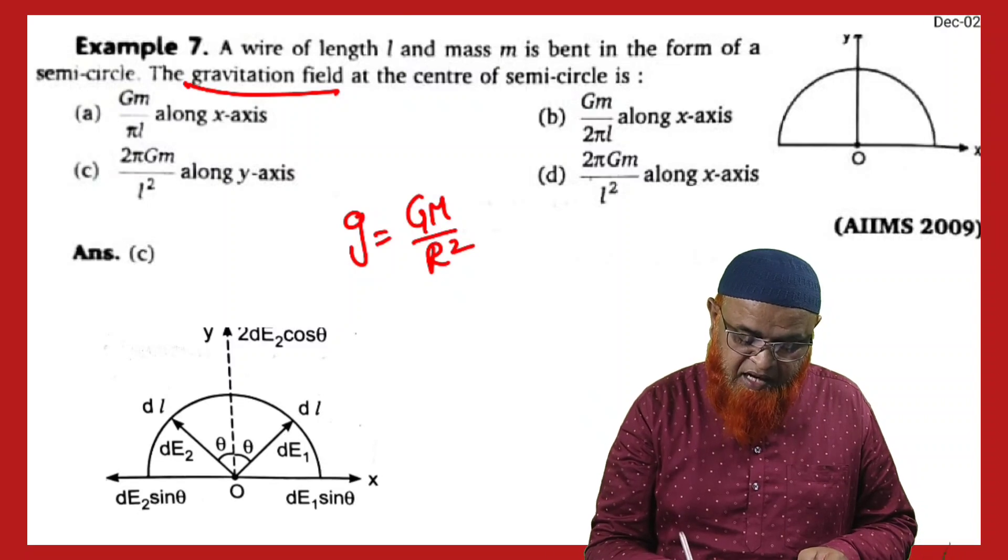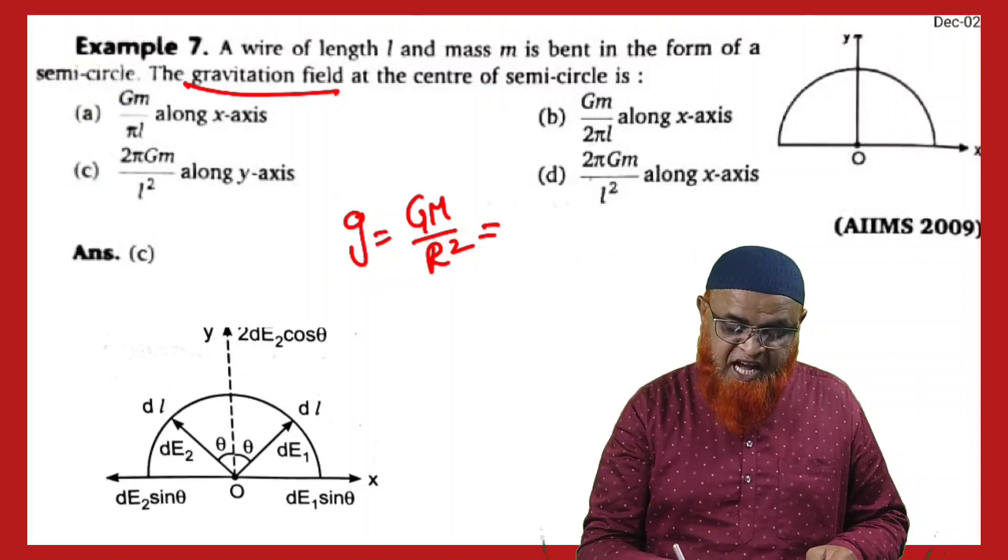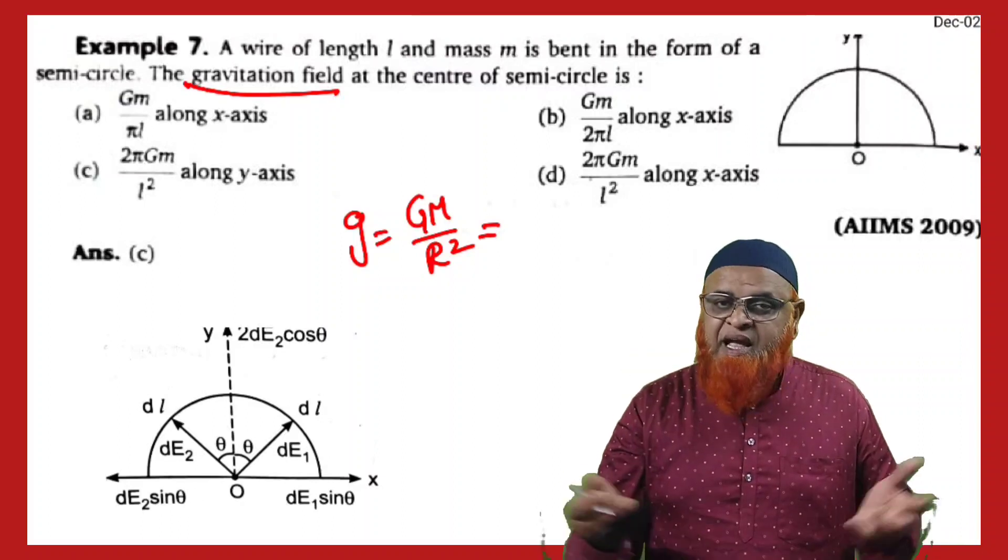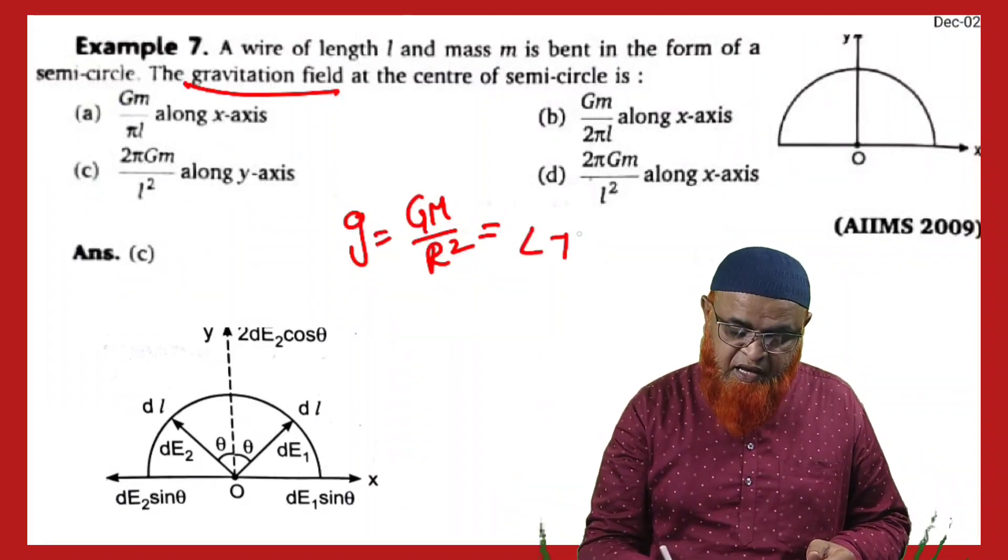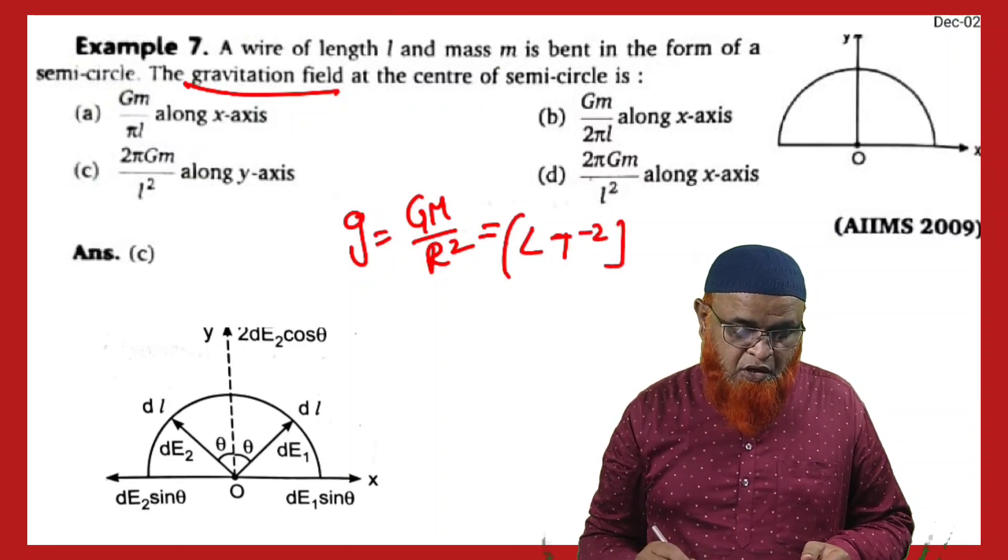Even though the formula is GM by R square, what is the dimensional formula for G? It is nothing but acceleration due to gravity, so LT power minus two. You have to select the formula in which GM by R square is present.